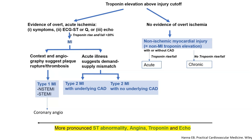If you have a troponin elevation but no clinical evidence of ischemia, this is what we call non-MI troponin elevation or non-MI myocardial injury. That's an extremely important entity, and in the era of high-sensitivity troponin, it is actually the most common cause of troponin elevation in the hospital — not type 2 MI. There are two types: if there is a troponin rise and fall, it's acute non-MI myocardial injury; if there is no rise and fall beyond 20%, it's chronic myocardial injury — seen in advanced CKD, chronic cardiomyopathy, chronic heart failure, elderly with chronic hypoxemia or anemia.